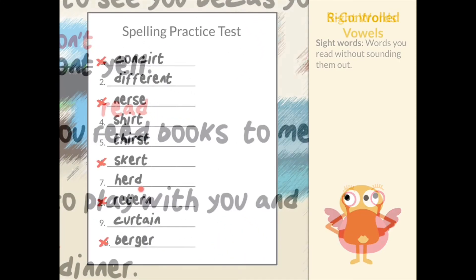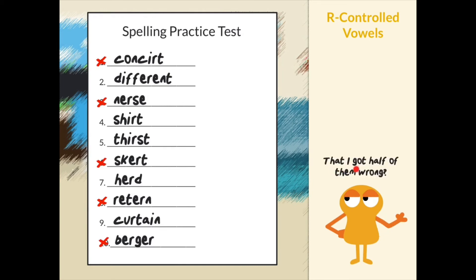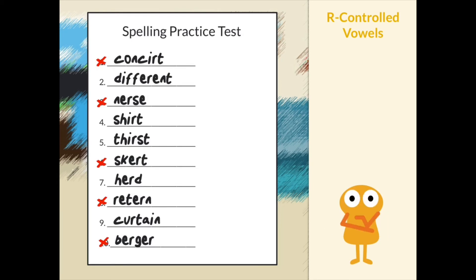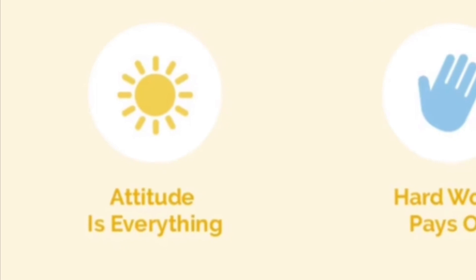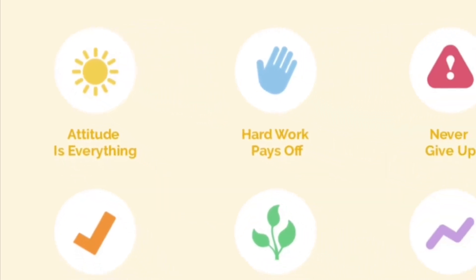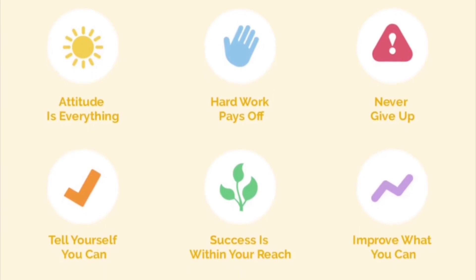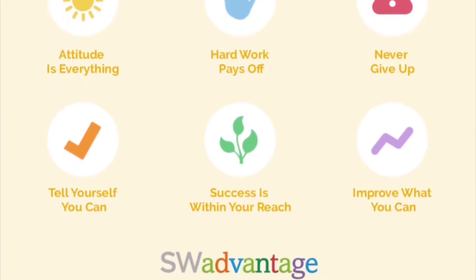How about this little reminder that attitude is everything. "Burger, these aren't that bad, Peanut." "You know what I'm noticing right away, though? That I got half of them wrong." "Yeah, well, you also got half of them right. Attitude's everything, my man." It's also one of six principles we believe will help anyone reach whatever goal they set for themselves. Our videos were created with these principles in mind.